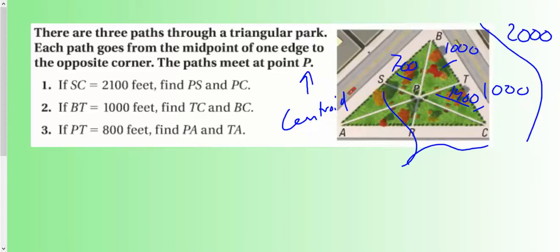PT is 800. And they want us to find PA and TA. So that's where that doubling is going to come in handy. This right here, if I double this, since that's 1 third and this is 2 thirds, this is going to be double that. So that's going to be 1,600.